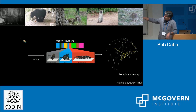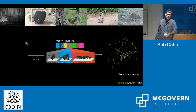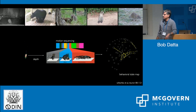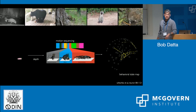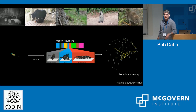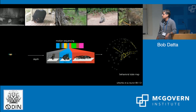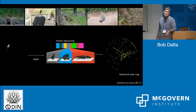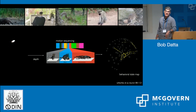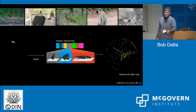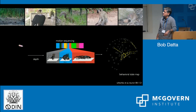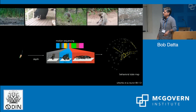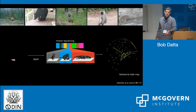We then submit these data to our motion sequencing, or MoSeq, algorithm. I won't talk too much about how MoSeq actually works, but it's an unsupervised time series machine learning approach to decomposing behavior. It seeks to identify the optimal set of behavioral elements — or what we refer to as behavioral syllables — out of which behavior is created by the brain in any given experiment.